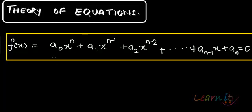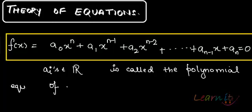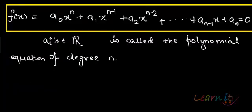This is essentially a polynomial equation where the aᵢ's are real numbers. This is called the polynomial equation of degree n — a polynomial equation of degree n.